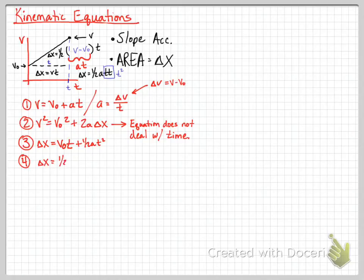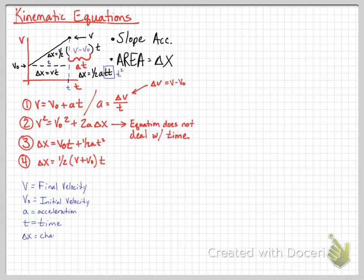And then the fourth equation that we did in class comes from the area of a trapezoid. And we've already covered this one. So just to make sure we're all on the same page, we recognize that v is final velocity, that v not is initial velocity, acceleration is a, time is t.